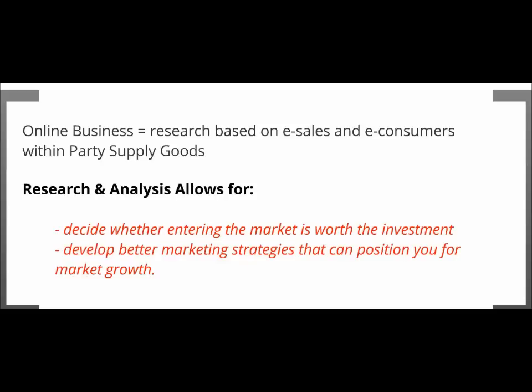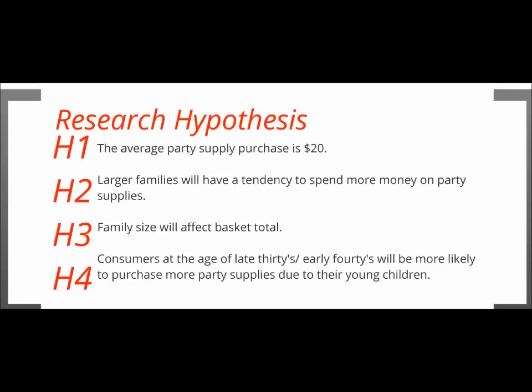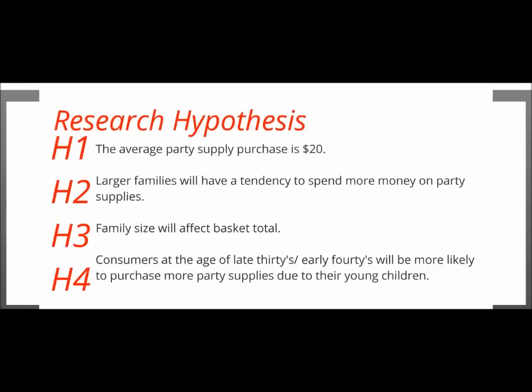The file I have is the party.sav file based off of comscore. The research hypotheses I accumulated were: H1 — the average party supply purchase is $20. Hypothesis two — larger families will have a tendency to spend more money on party supplies. Hypothesis three — family size will affect basket total. Hypothesis four — consumers at the age of late thirties and early forties will be more likely to purchase more party supplies due to their young children.